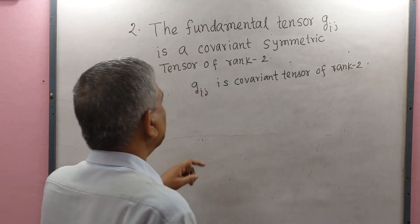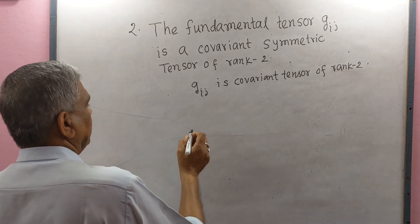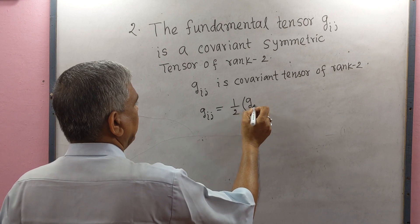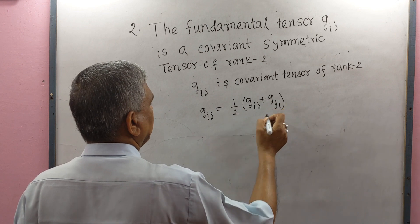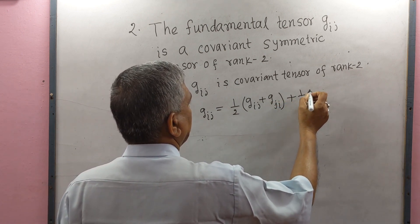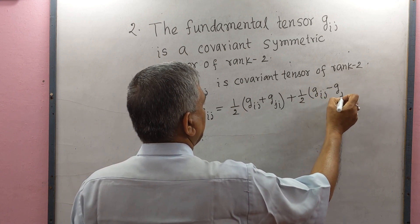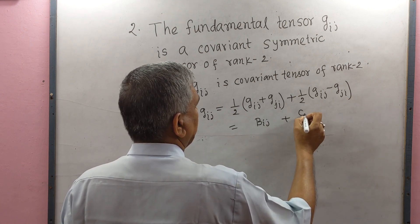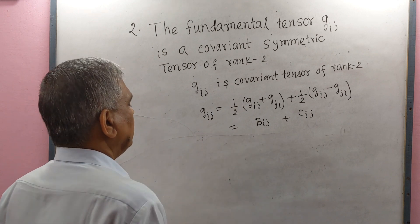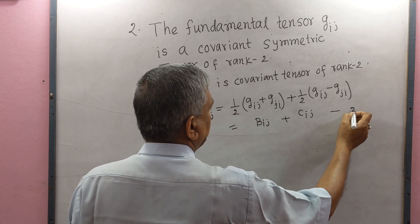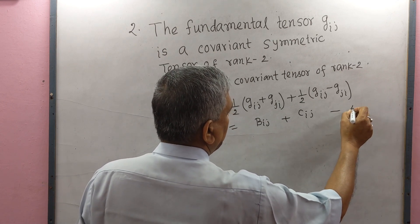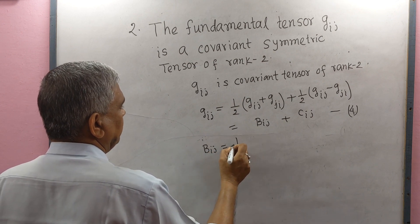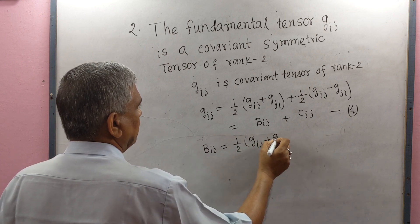Now we have to prove that g_IJ is a symmetric tensor. Let us write: g_IJ = (1/2)(g_IJ + g_JI) + (1/2)(g_IJ − g_JI). Let the first part be B_IJ and the second part be C_IJ. So g_IJ = B_IJ + C_IJ. Here B_IJ = (1/2)(g_IJ + g_JI).